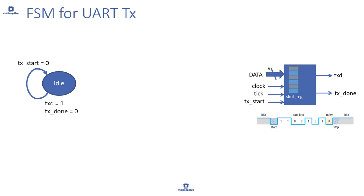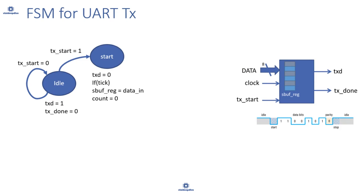In the idle state, two things can happen. Someone sends data on the bus and asserts tx_start=1. Until we get that signal, data is not ready and we stay in the idle state. As long as tx_start=0, nothing changes — we stay in idle and keep driving txd=1 as an indication of the idle state.